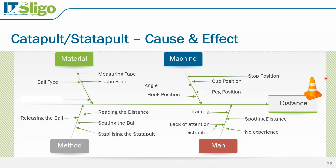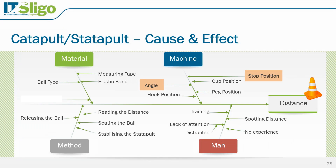We can relate this to the catapult or our startapult. If we want to optimize the distance that the ball travels, there are a number of factors which influence that — the material, the machine, the man, the method, and so on. This is our cause and effect diagram for this process. However, specifically we want to experiment with two of these factors — in this case, we are going to experiment with the stop position and the start angle, which will be the two factors used in this experiment.